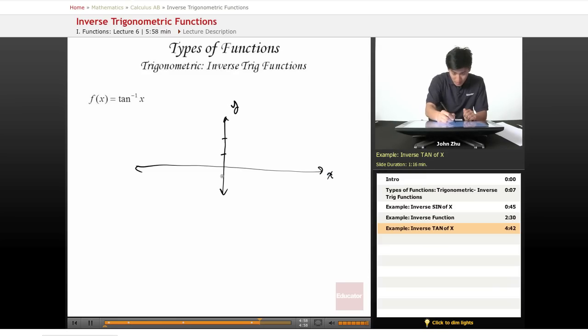This function goes up as high as pi over 2 on the y-axis and down to negative pi over 2. And it has these horizontal asymptotes right here.